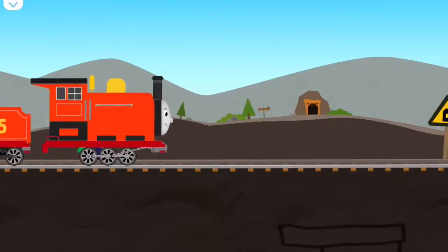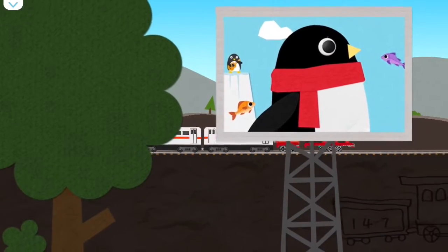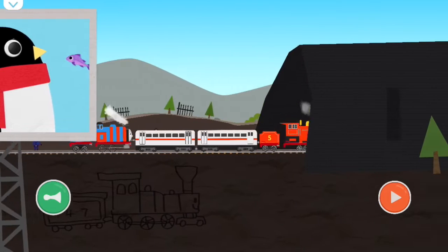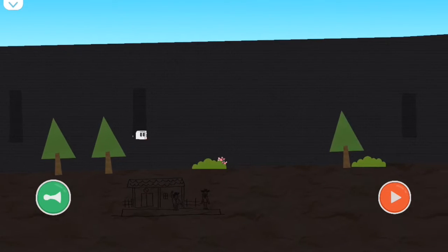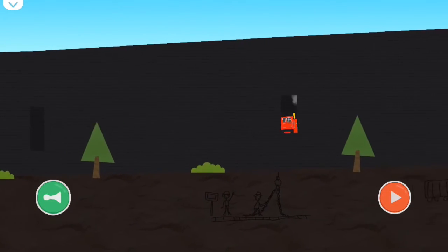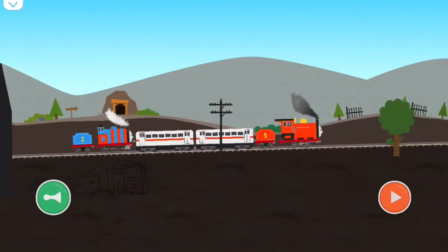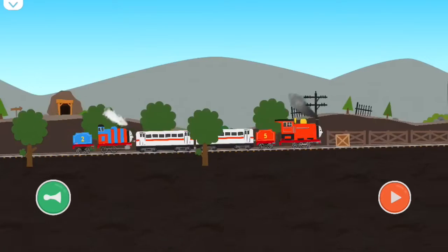Speeding down the line like a lightning flash. Make way for James, hooray for James! Hang on to your hat as he pushes past. Make way for James, hooray for James! He really knows, he really knows how to stage a show. You gotta stand back and watch him go. He's the really splendid engine with a bright red coat.